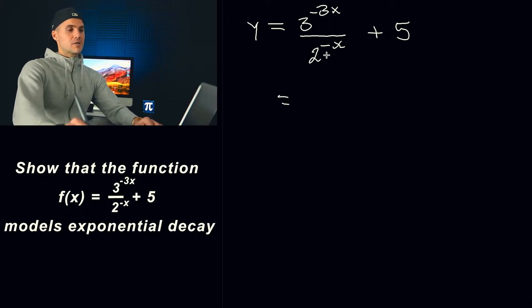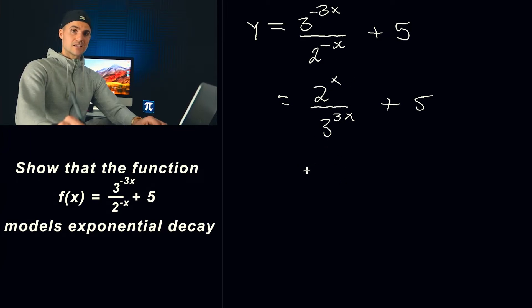So first thing I'm going to do is these are negative exponents so I'm going to actually switch these up. I'm going to write, let's not put a bracket yet, I'm going to write 2 to the power of x over 3 to the power of 3x like that and that's going to be plus 5. I just switch these and then switch the signs of the exponents